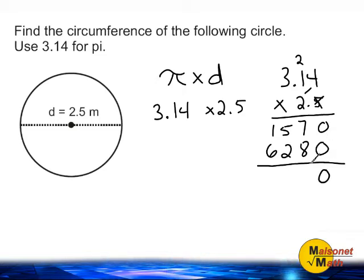0 plus 0 is 0, 7 plus 8 is 15, carry our 1. 5, 2, and 1 is a total of 8, and 6 plus 1 is 7.